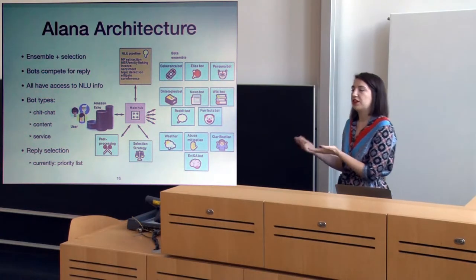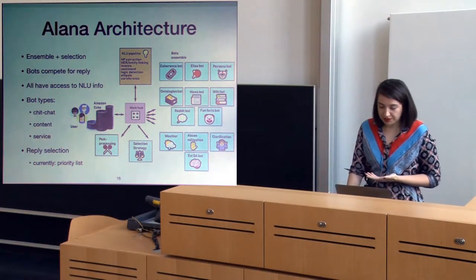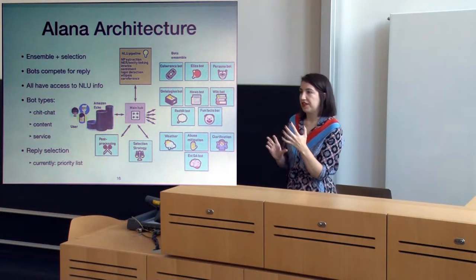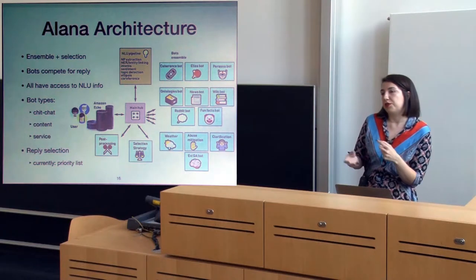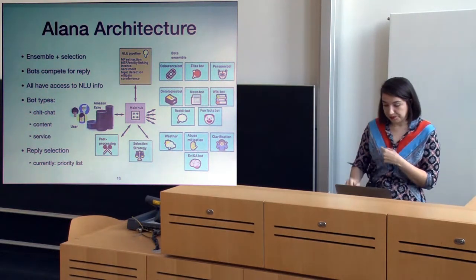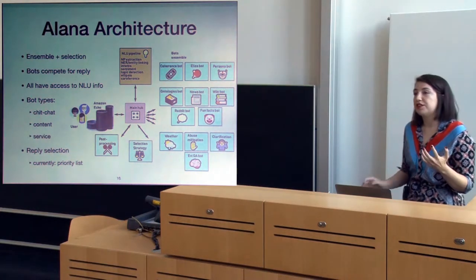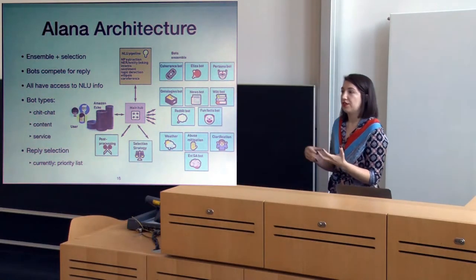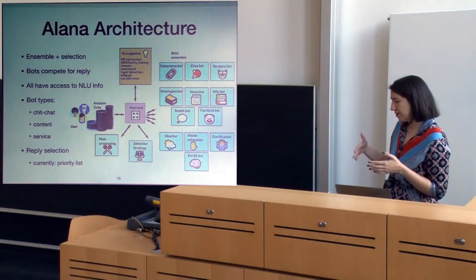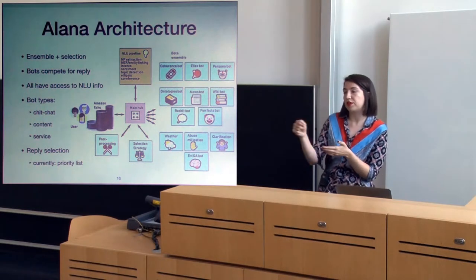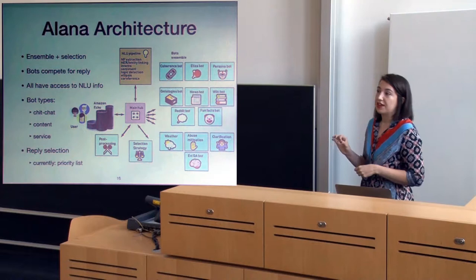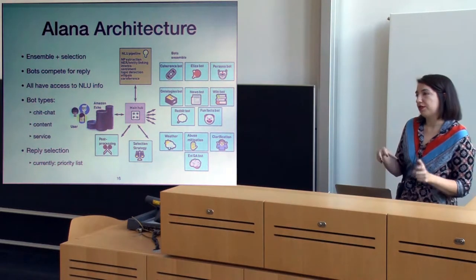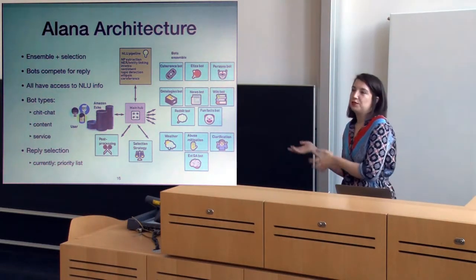We had a coherence bot designed to keep the topic of conversation — if none of the other bots had a good response, we could fall back on this one. We had an ontology bot very good at discussing movies, books, and video games, using IMDB data, which allowed us to be specific about entities and even disambiguate — for example, asking 'do you mean this Tom Jones or the other one?' Thanks to this ontology bot, we could handle similar names and resolve which entity the user was talking about.